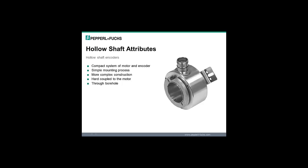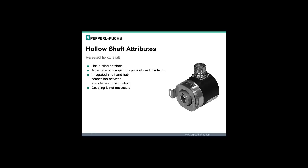The hollow shaft is more compact compared to the solid shaft. Because you don't need a coupler or mounting bracket, it makes the mounting faster and easier. The construction is more complex and is usually slightly higher in price compared to a similar solid shaft encoder. The hollow shaft has a hole completely through the unit, so it could be placed between other parts such as the motor and brake. A torque rest is required with hollow and recessed hollow shaft encoders. This prevents the radial rotation of the encoder.